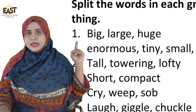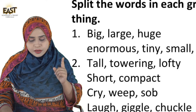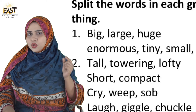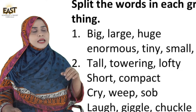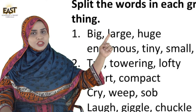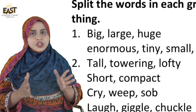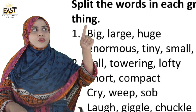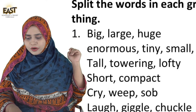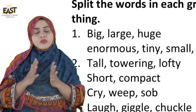First, write 'Big' in Group 1. The next word is 'Tiny' — tiny ka meaning hai chota, so it goes into Group 2. Now we have 'Large'. Large ka kya matlab hota hai? Bada — so it goes into Group 1. Write large in Group 1.